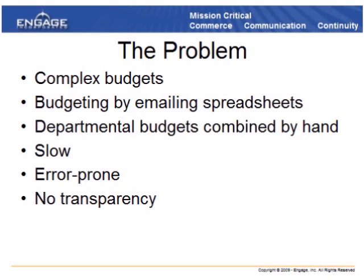The department would then have to argue back based on what they got from the distribution. So it was not a collaborative process at all — it was budget by executive decree. This creates a lot of unhappiness and difficulty for departments, as opposed to being able to adjust their own budgets, work with them, and most importantly, move money from one area to another based on their requirements. All of that capability is taken away when the CFO simply says, this is your budget, accept it.